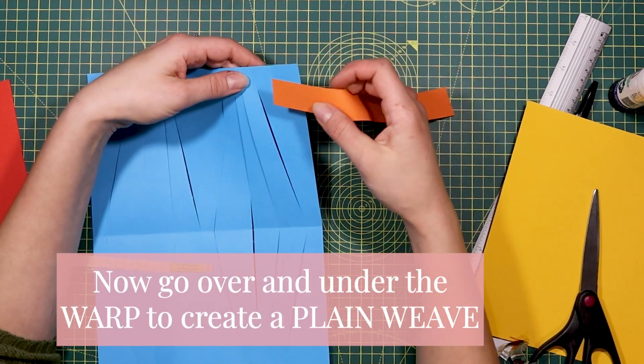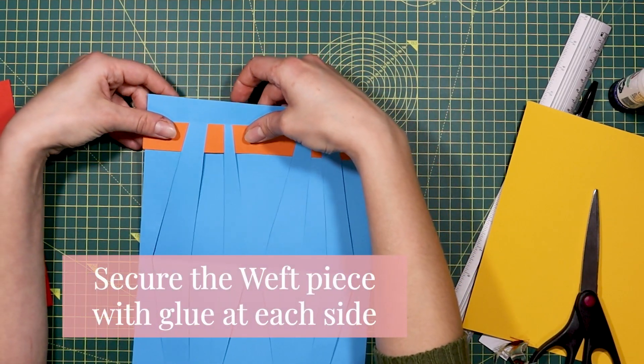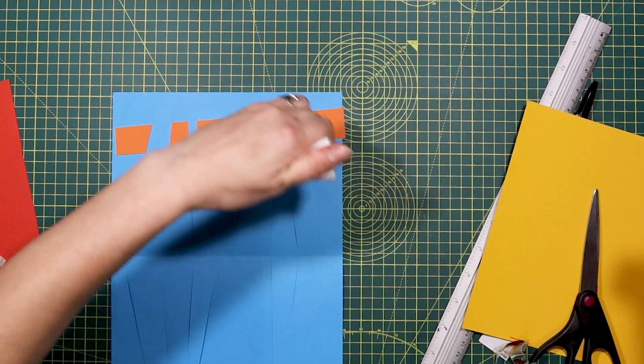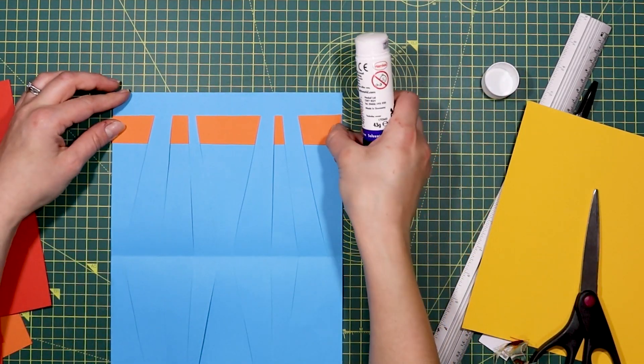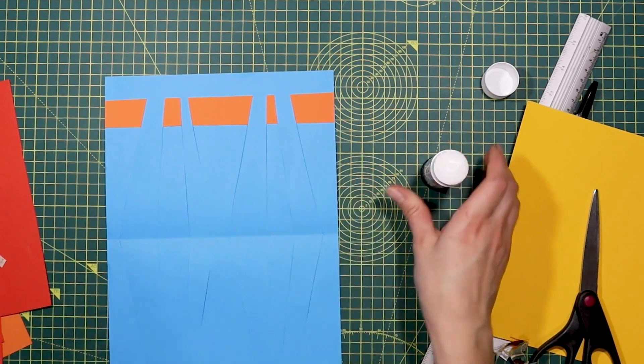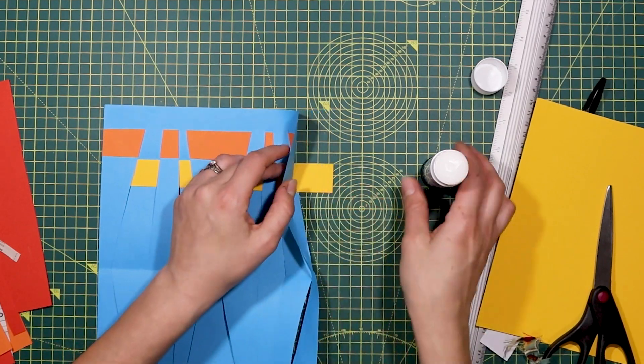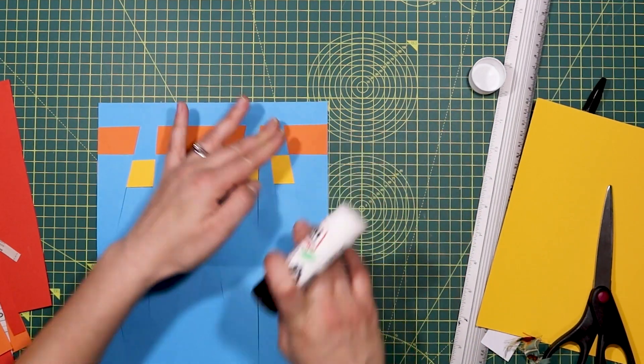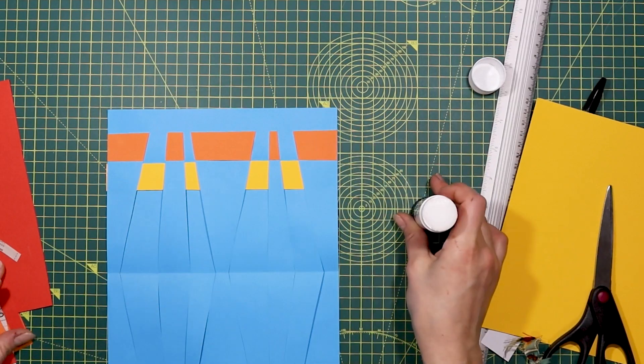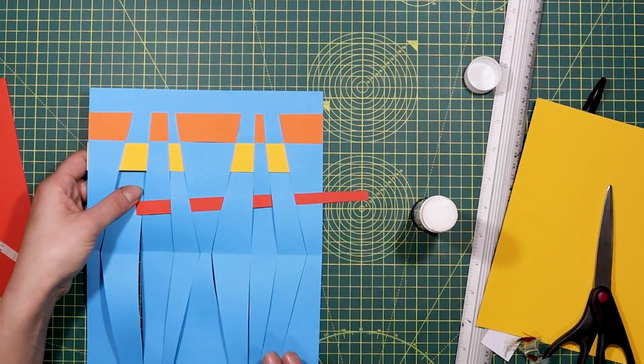Now to start the plain weave, simply go over and under, over and under, right to the edge of your paper. Secure this weft piece by gluing each side. Then carry on with the next strip using yellow. Instead of going over and under, go under and over, the alternative pattern. Make sure it's secure with glue and pushed right next to the previous piece so there are no gaps. Keep going until the base of your page.